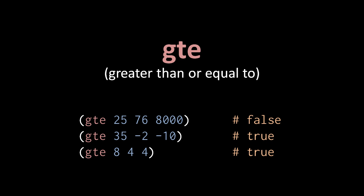If we use the greater than or equal operator instead, written GTE, then this last example returns true because 8 is greater than 4 and 4 is equal to 4.